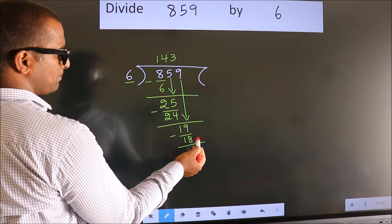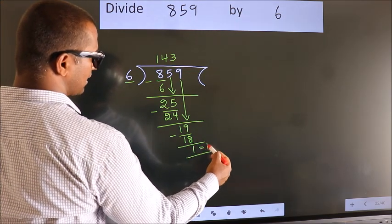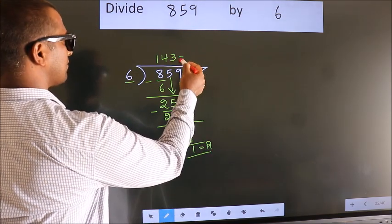No more numbers to bring it down. So we stop here. This is our remainder. This is our quotient.